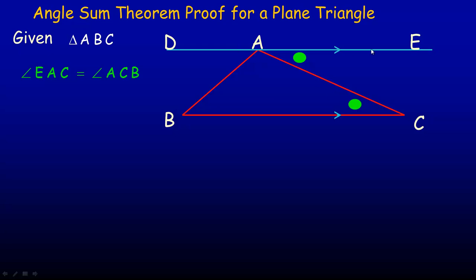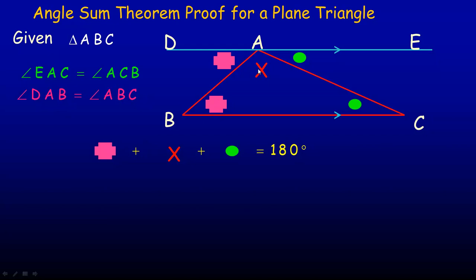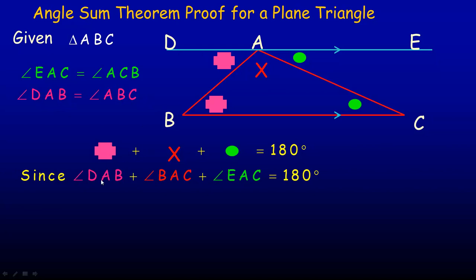DE is parallel to BC, and AC cuts through as a transversal. The angles between the parallel lines on opposite sides of the transversal are equal — some people call this a Z pattern. So angle EAC equals angle ACB. Similarly, angle DAB outside the triangle equals angle ABC inside the triangle. These three angles — DAB, BAC, and EAC — have to add up to 180 degrees because they form a straight line along DE.